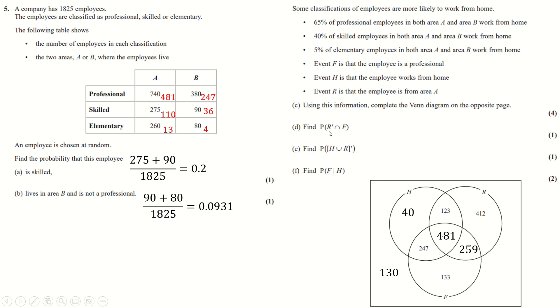Next, find the probability that you're not in R and in the F circle. So not in R, so outside of R but in F is going to be these two so add those up divided by the total number of people.